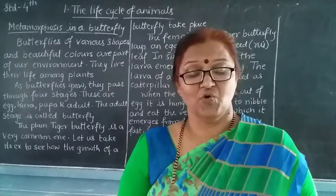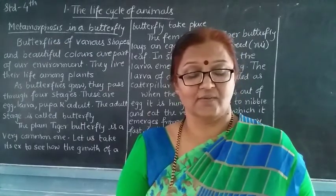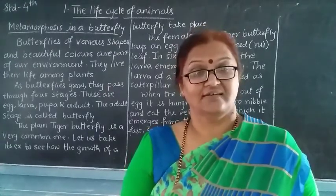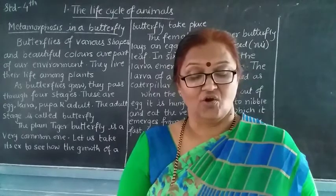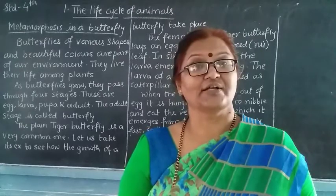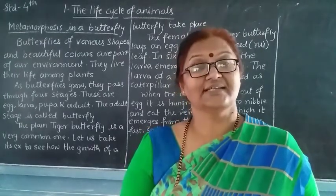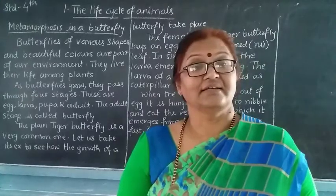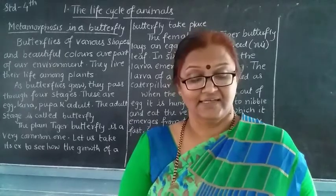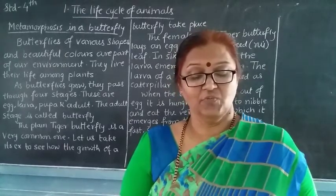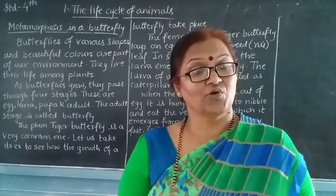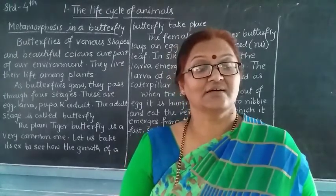Just before the last molt, the caterpillar weaves a button of silk thread on a stalk or a leaf and hangs itself from it. When it molts this time, it forms a pupa.